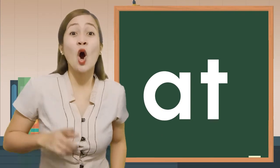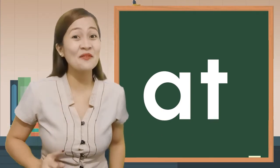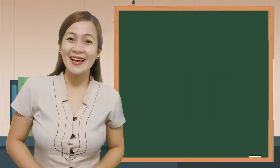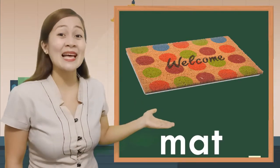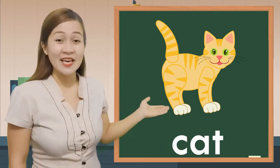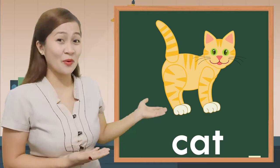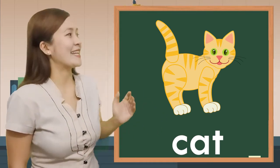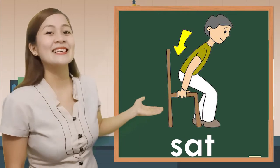It shows that only the first letter has changed. Now you know what the meaning of each word is — that's great, kids! Mat: we use this at home. And cat: it can be our pet. We should love and protect them. And this is sat.